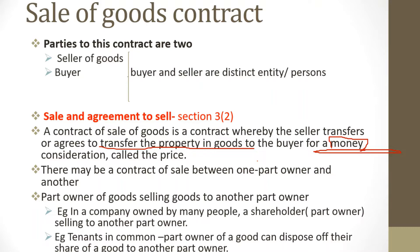There may be a contract of sale between one part owner and another part owner. A part owner can be illustrated with two examples. In Kenya, companies are owned by many people, so a shareholder of a company becomes a part owner of that company.